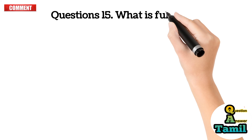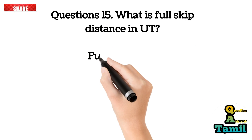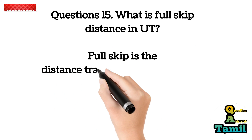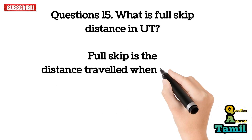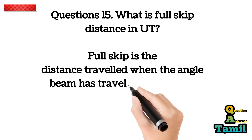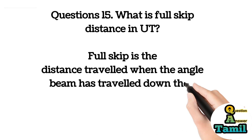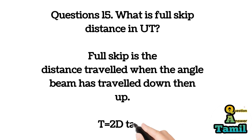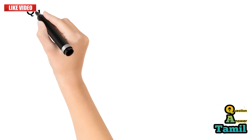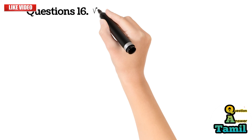Question 15: What is full skip distance in UT? Full skip is the distance traveled when the angle beam has traveled down then up. The formula is: T = 2D × tangent(angle).